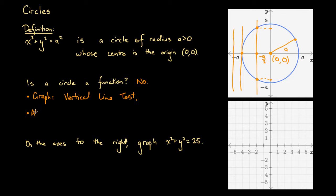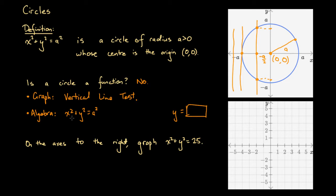Another way is to look at the algebra. We have x squared plus y squared equals a squared. Usually when looking at functions we like to get y equals something on the right-hand side. So we subtract x squared from both sides to get y squared equals a squared minus x squared, then take the square root of both sides. The square root of y squared is y, giving us y equals plus or minus the square root of a squared minus x squared.